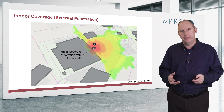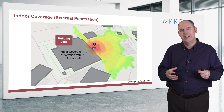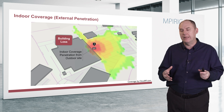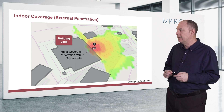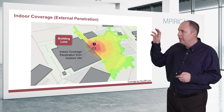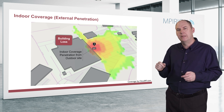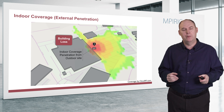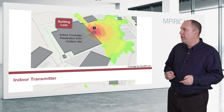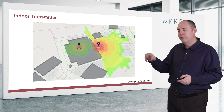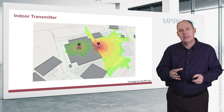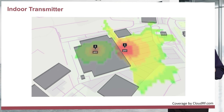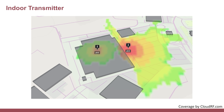This is where DAS systems come in. DAS is a whole solution addressing specific use cases such as covering a building. We need to think about the building, the losses within it, and how to counteract those losses to provide coverage. So what I'm going to do is switch over and put a transmitter in the building, which is effectively what DAS does — a distributed antenna system places the antenna inside the building.